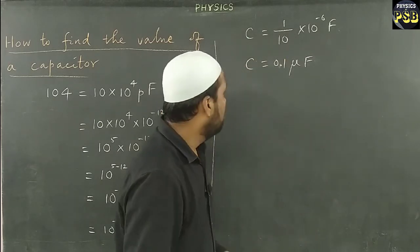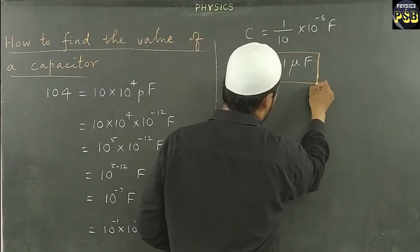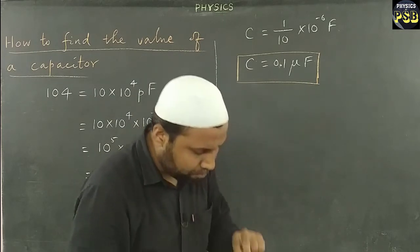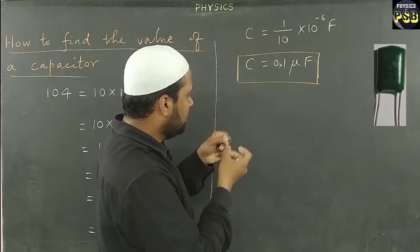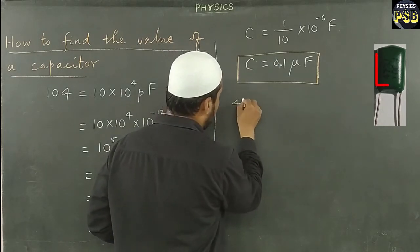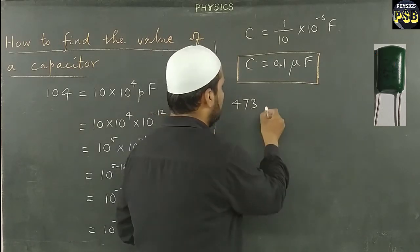This is how one can find out the capacitance of a non-polar capacitor. I will take one more example. Here I have this metal film capacitor. In this capacitor, 473 is mentioned. So what does it mean?